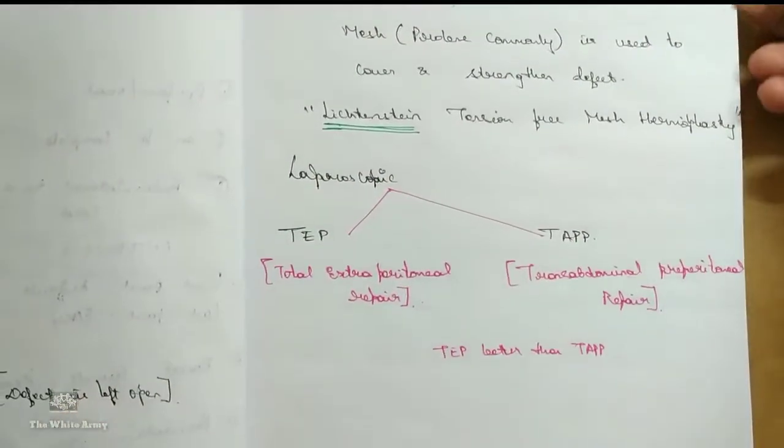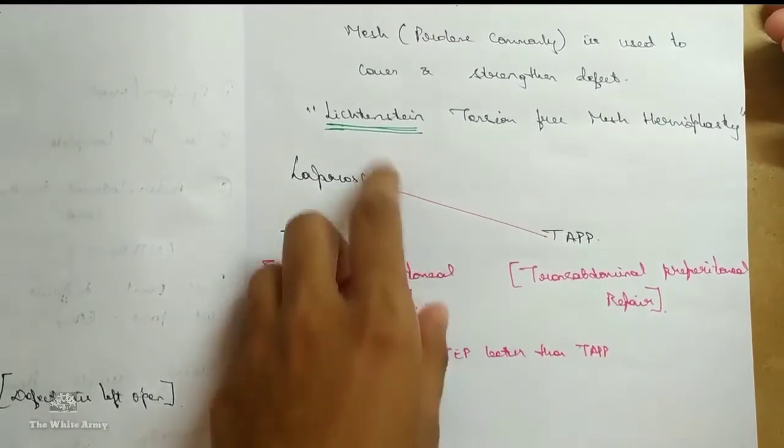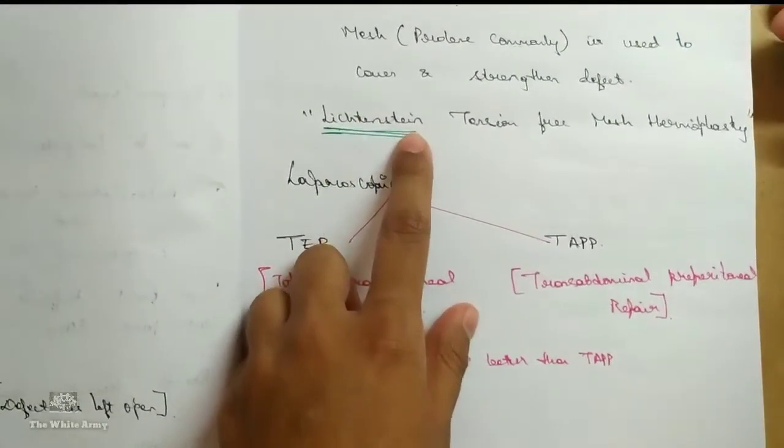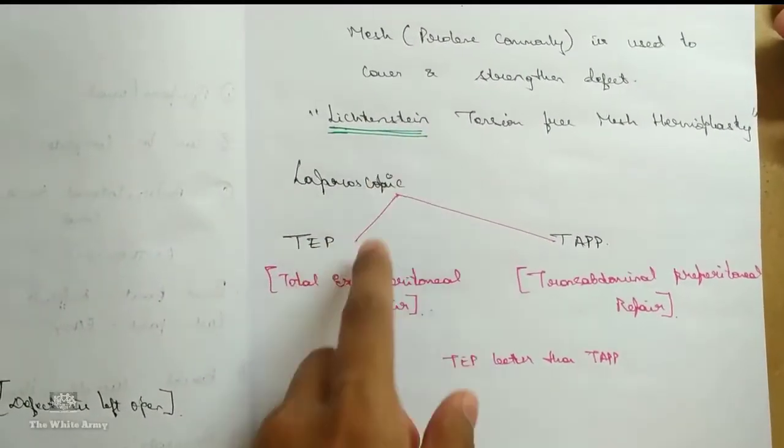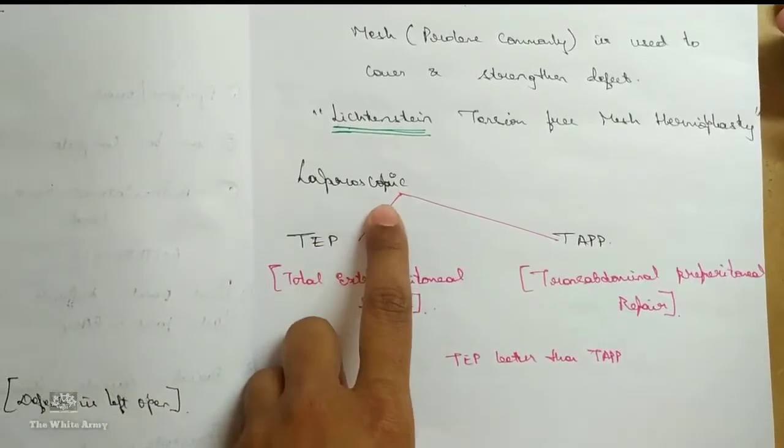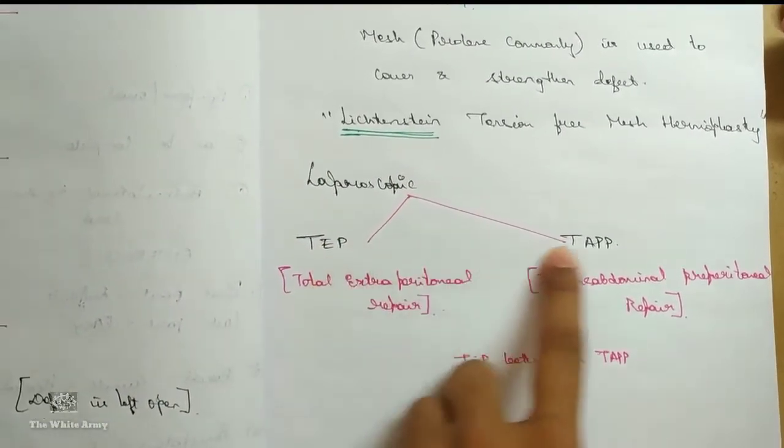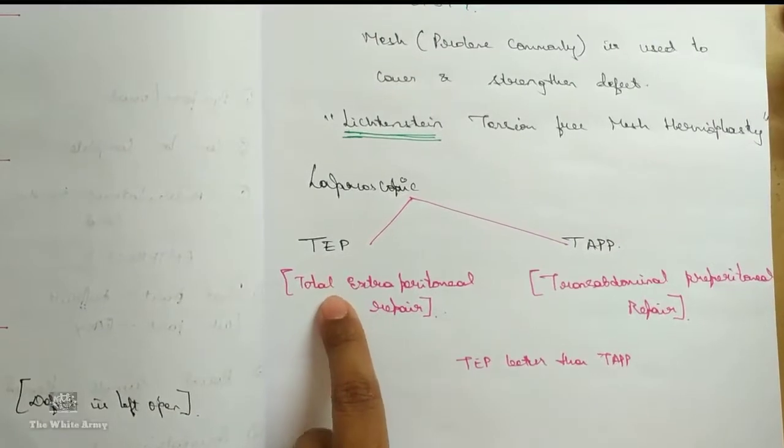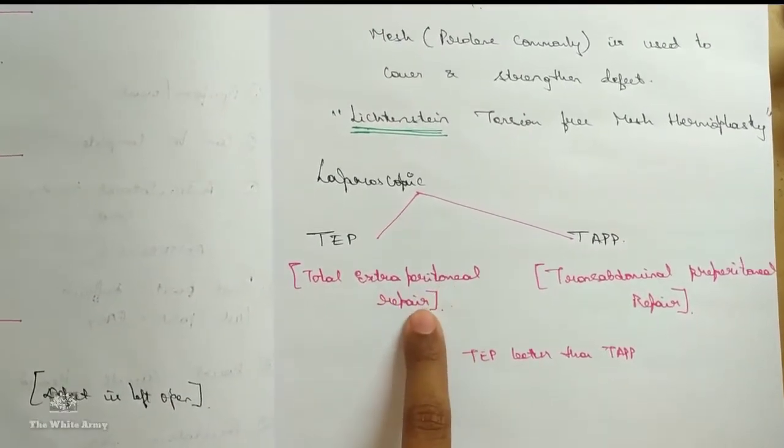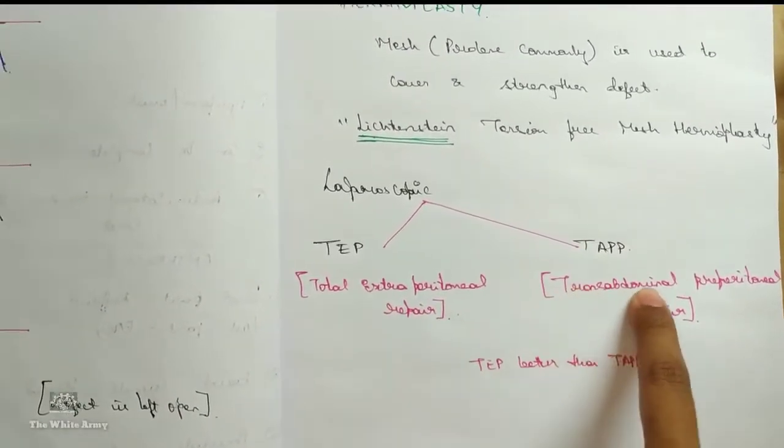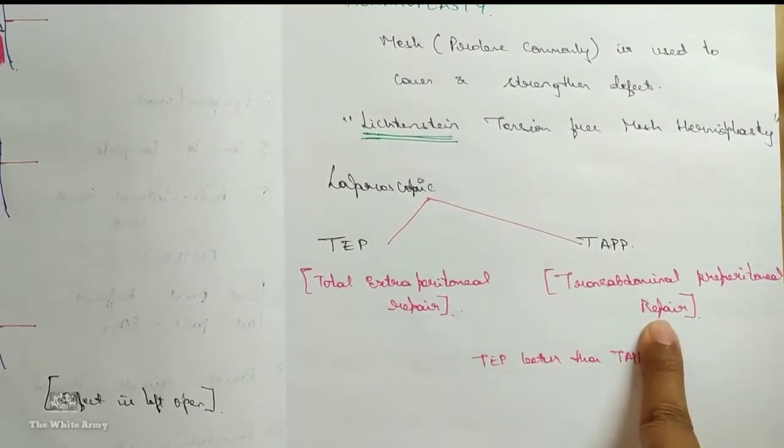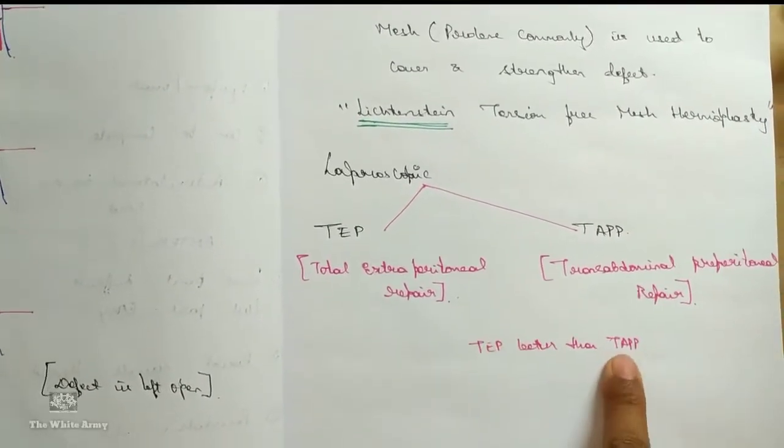Lichtenstein tension-free mesh hernioplasty is the surgical surgery choice. And laparoscopically it is TEP or TAPP. TEP is total extraperitoneal repair. TAPP is transabdominal preperitoneal repair. TEP is better than TAPP always.